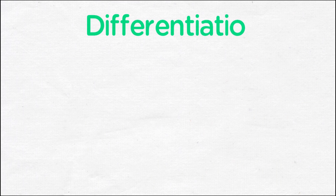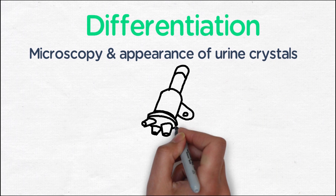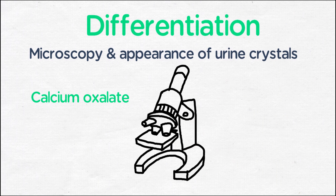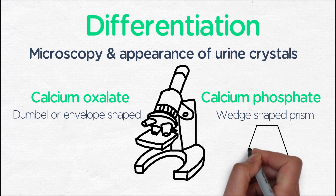Calcium-based stones are differentiated by their microscopy and their appearance of urine crystals. Calcium oxalate stones, again the most common, have dumbbell or envelope-shaped crystals. Calcium phosphate stones, in contrast, have wedge-shaped prism crystals.